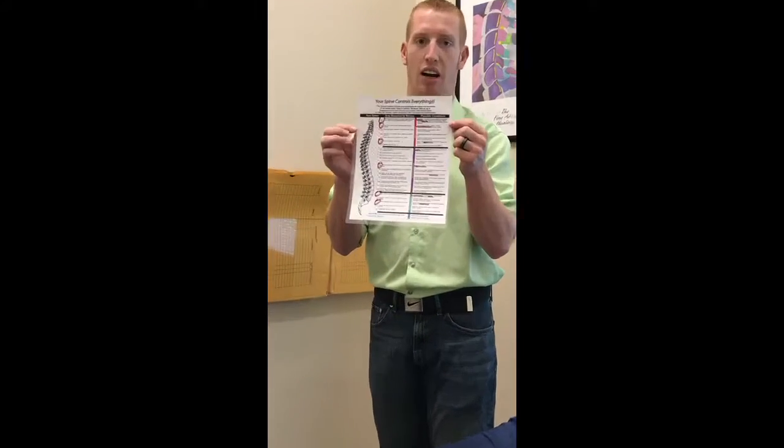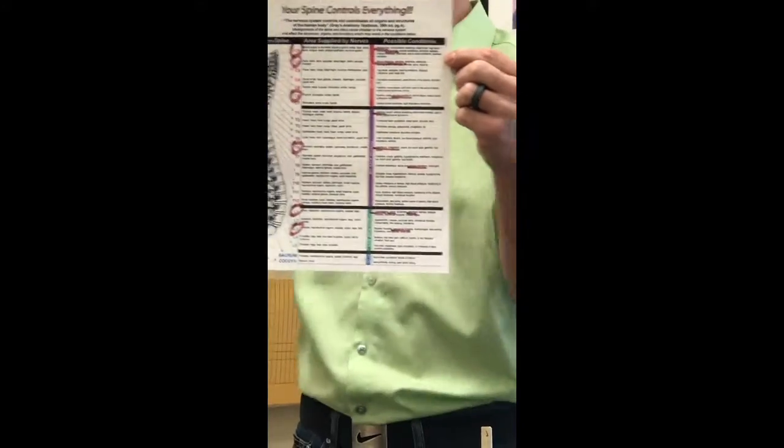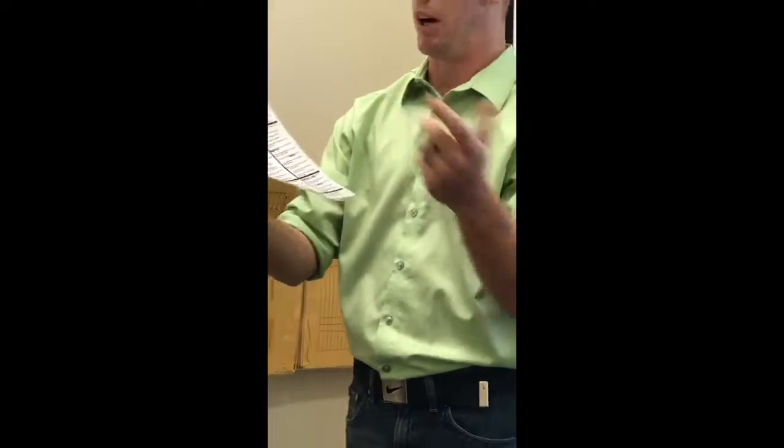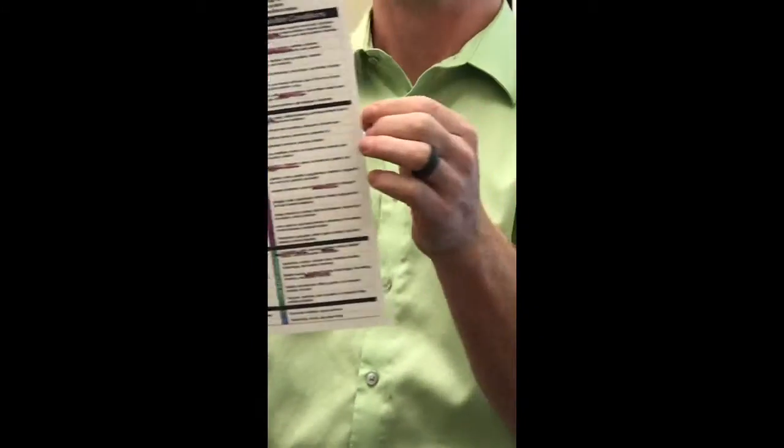I've circled and underlined a few symptoms and conditions on the chart. Starting with headaches — a lot of patients complain of headaches or migraines, and if you look at this chart, that correlates right back to C1, the upper segment in your neck. Another big one recently has been allergies or sinus infections. A lot of people say their nose is running or they're blowing their nose all the time — that relates right back to C2, also in the upper part of your neck.